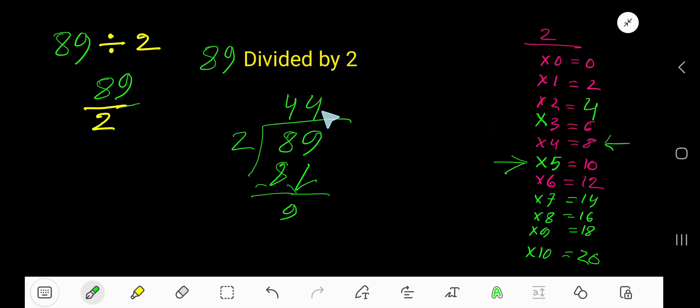4 times. 4 times 2 is 8, subtract 1. So your answer is 44 remainder 1. But if you want to write your answer in decimal form, what will you do? Just add a decimal and you are allowed to take any number of zeros.